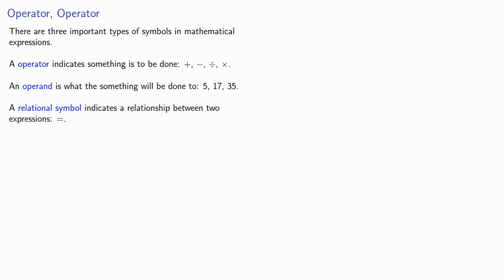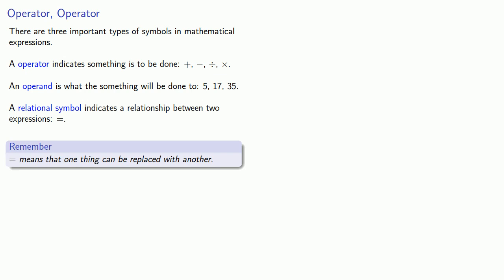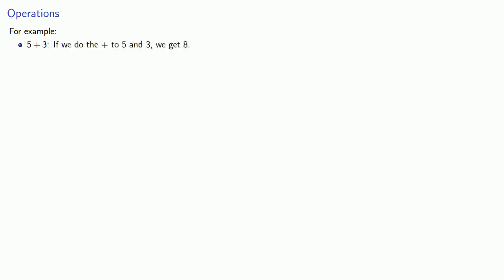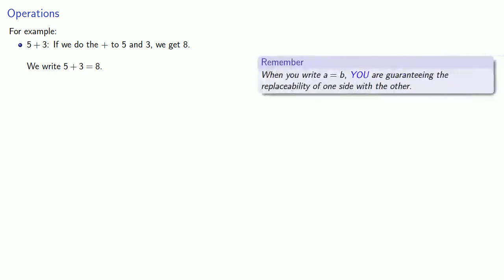It's very important to recognize that equals means that one thing can be replaced with another. For example, 5 plus 3: if we do the plus thing to 5 and 3, we get 8, and we write 5 plus 3 equals 8. When you write A equals B, you are guaranteeing the replaceability of one side with the other. Unless you are willing to stand by your guarantee, don't write the equals.